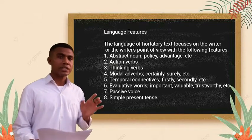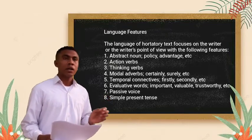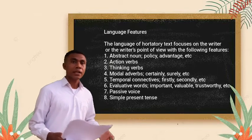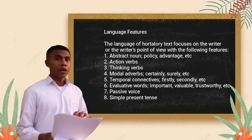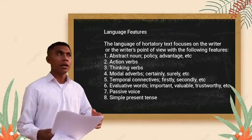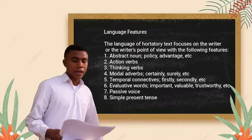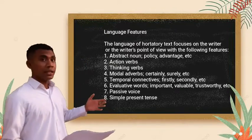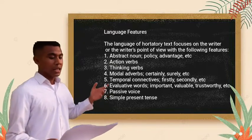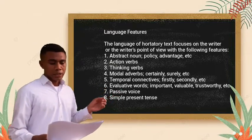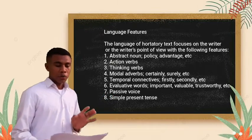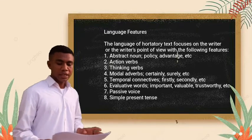The third aspect of this kind of text is called language features. This is a very specific and important section, because without it the text can be meaningless for readers. As explained on the screen, there are eight parts to the language features of this kind of text, which can be used to identify or write a hortatory exposition text.